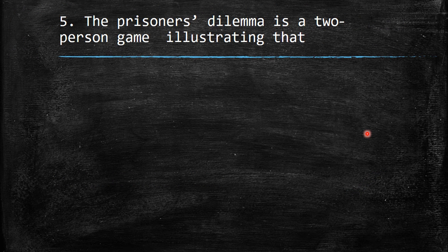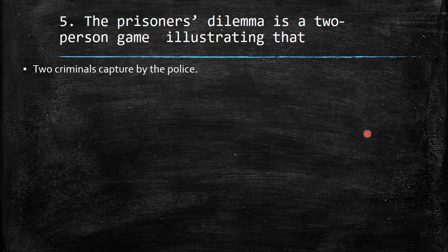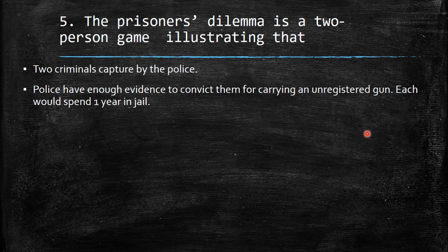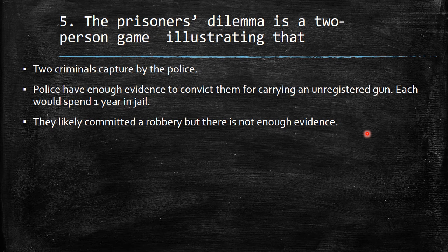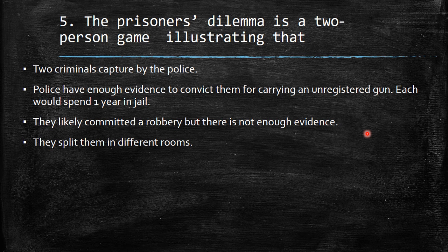The fifth question: the prisoner's dilemma is a two-person game illustrating that... Let's recall the situation. We have two criminals captured by the police. The police have enough evidence to convict them for carrying an unregistered gun — each would spend one year in jail. They likely committed a robbery as well, but there is not enough evidence to convict them of that.